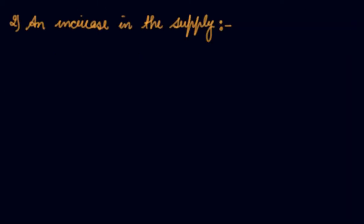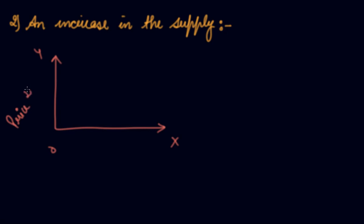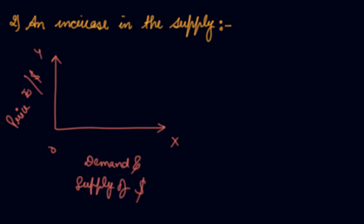Now let's see what happens if there is an increase in the supply of US dollars. This is your graph — here you are taking the rate of rupee over dollar on one axis, and here you are taking the demand and supply of dollar in India. This is your demand curve, this is your supply curve, and this was your equilibrium rate and quantity.